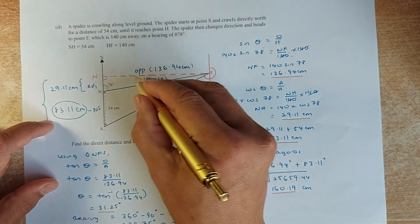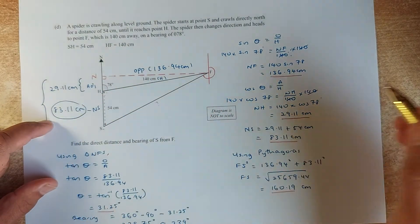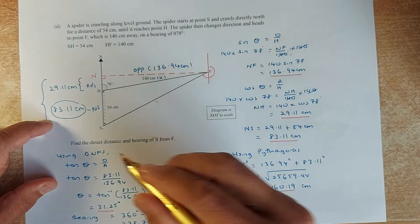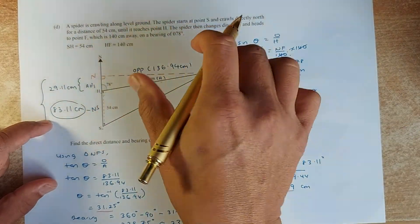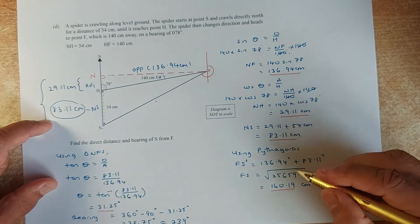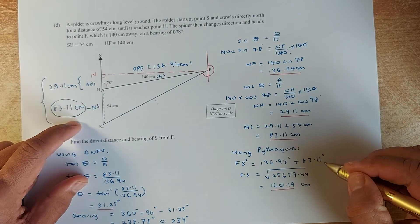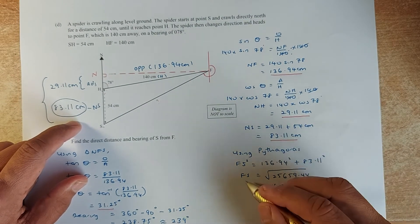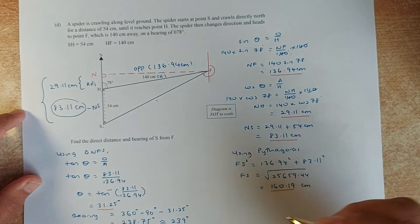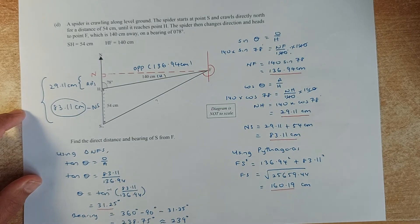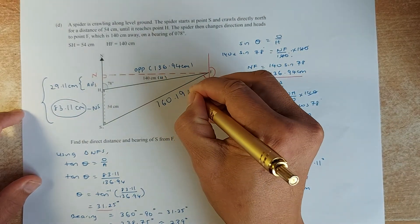Knowing the red line NF is 136.94 cm and NS is 83.11 cm, we use Pythagoras to find the length SF. So 136.94 squared plus 83.11 squared equals FS squared. The square root of 25,659.44 gives a length of 160.19 cm.